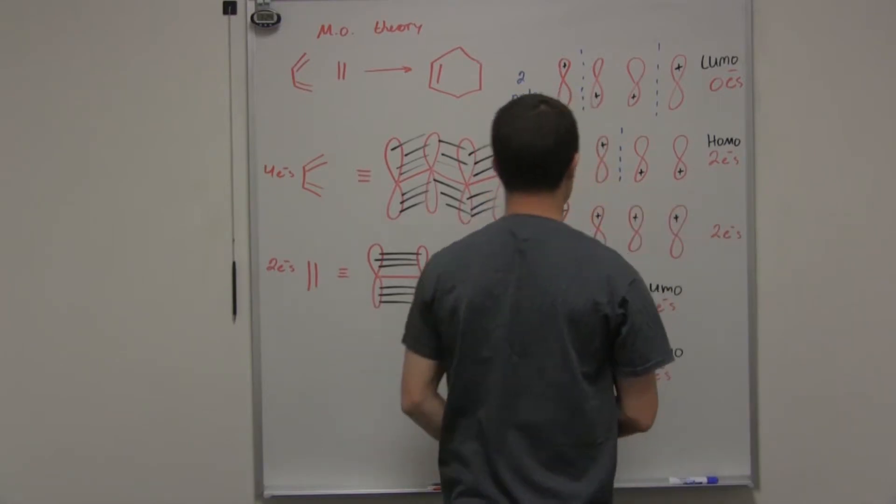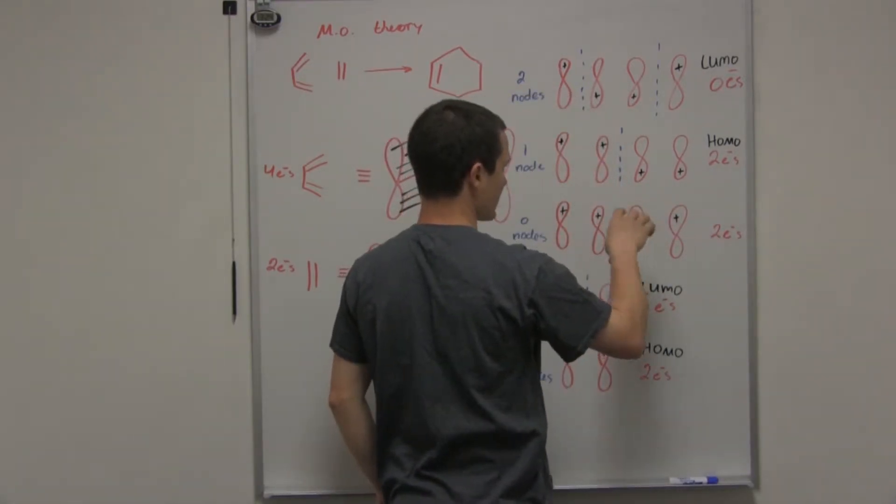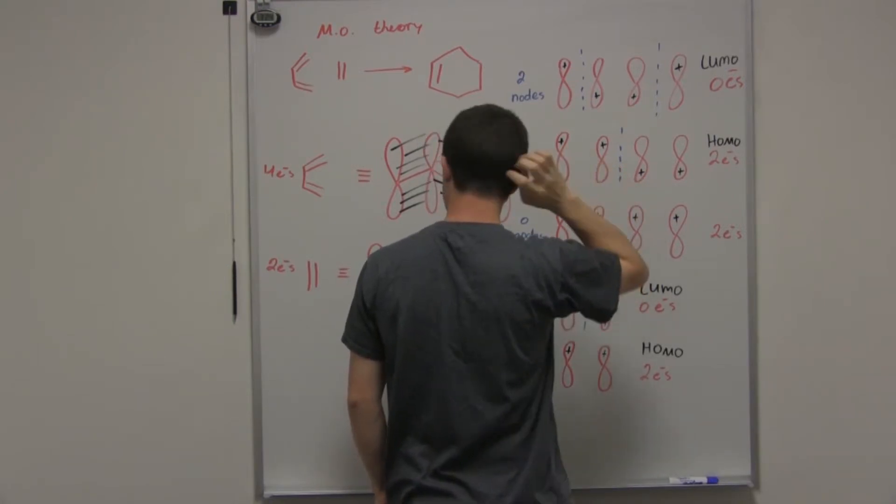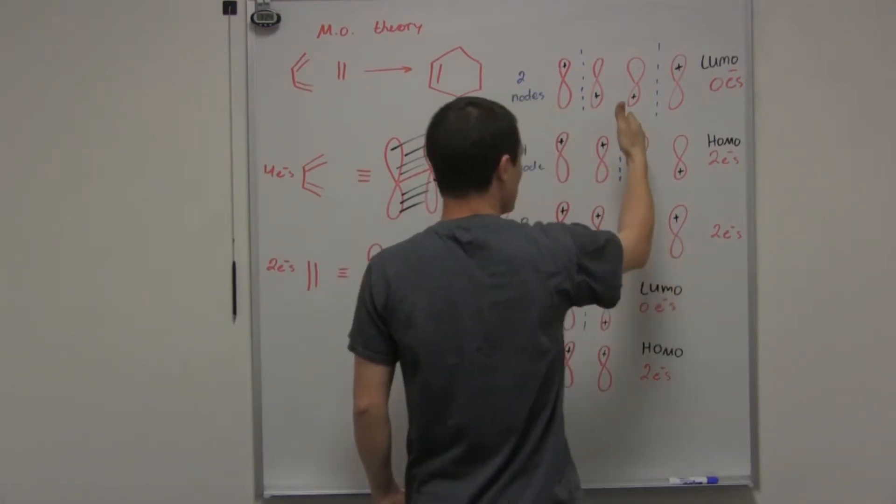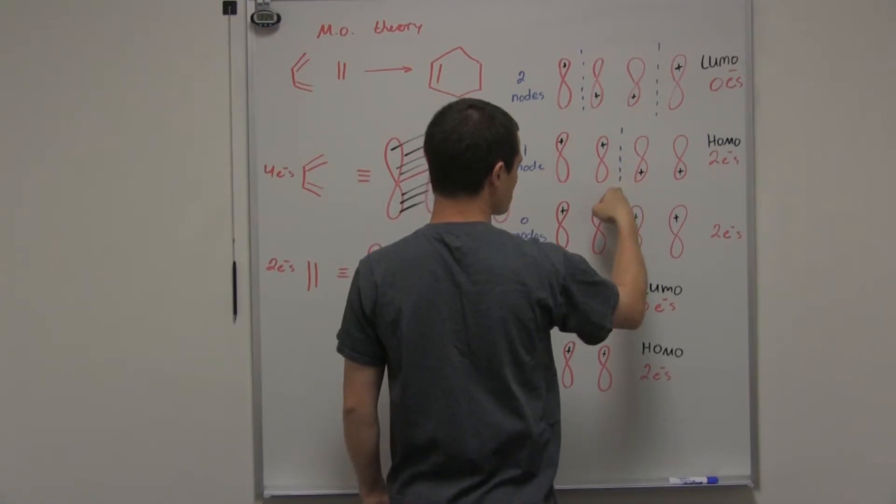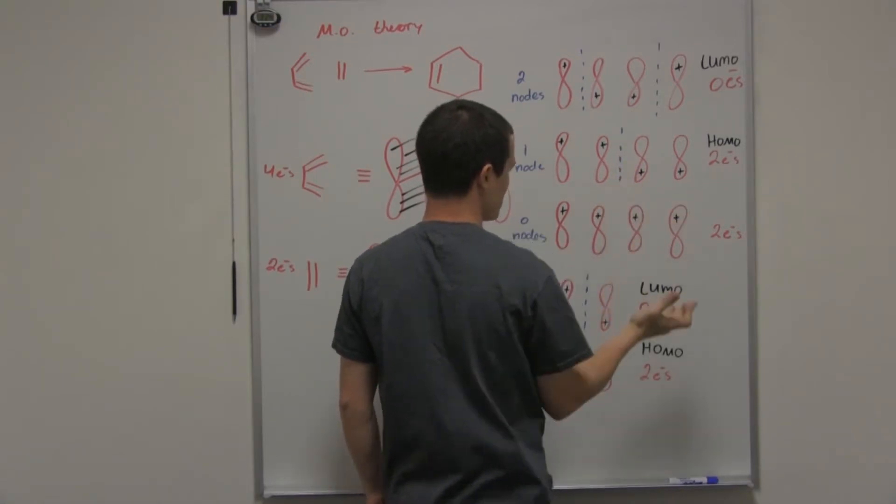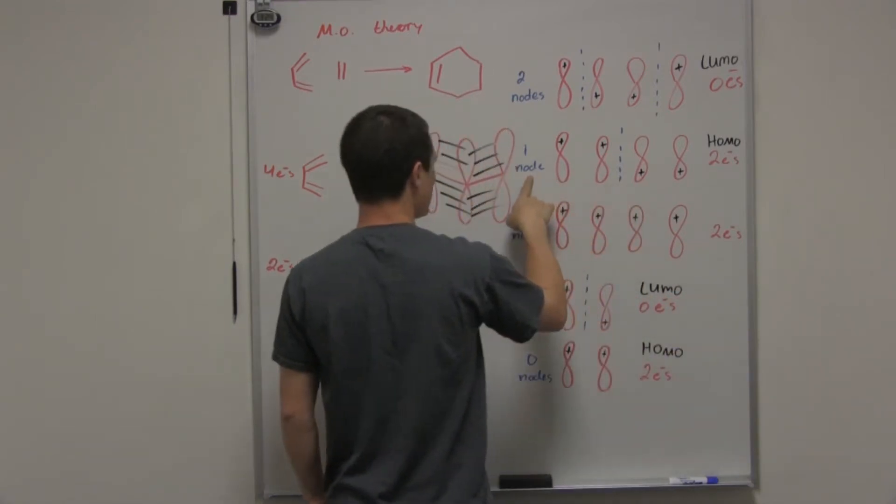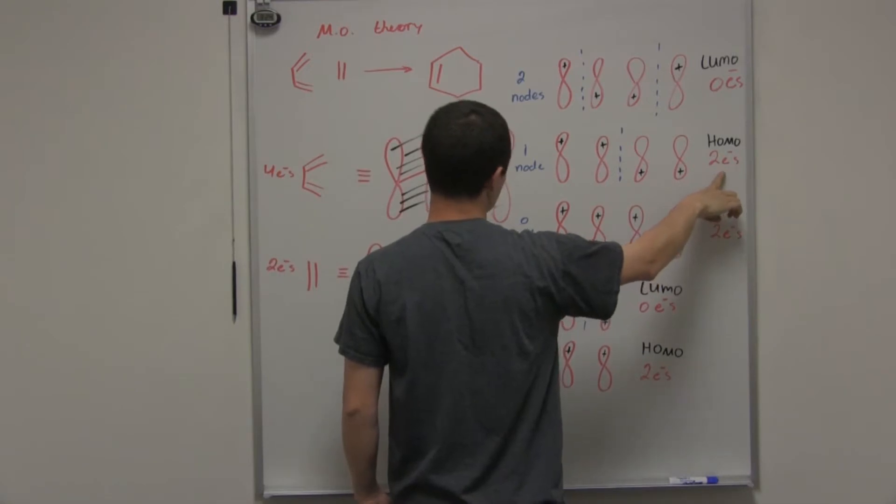When we do that, we need to introduce nodes, because we're going to raise the energy of the system, and we start to have things out of phase. We have one node, and we make the nodes as symmetrical as possible. The most symmetry we can get is to put one in the middle. We have one node, we've accounted for two more electrons.